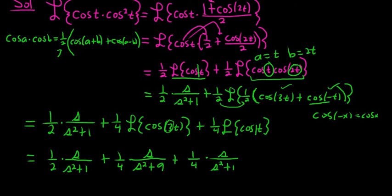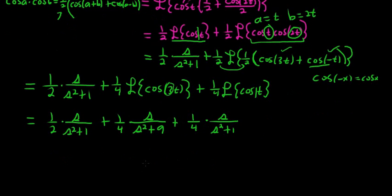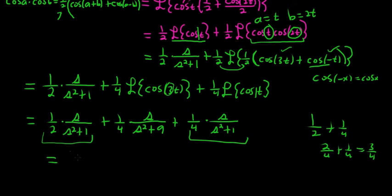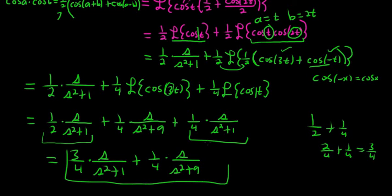Oh, look at that. Would you look at that? That's pretty interesting. So we have some common terms here. We have this and this. Didn't even see that. So 1 half plus 1 fourth. We have 1 half plus 1 quarter. Well, 1 half is 2 quarters, so 2 quarters plus 1 quarter is 3 quarters, so 3 fourths. So this is equal to 3 fourths times s over s squared plus 1 plus 1 fourth times s over s squared plus 9. And that's how you find the Laplace transform of cosine cubed of t.